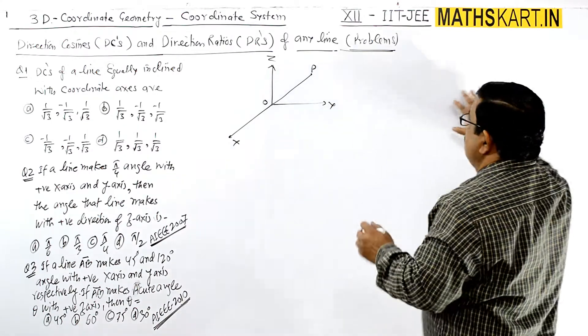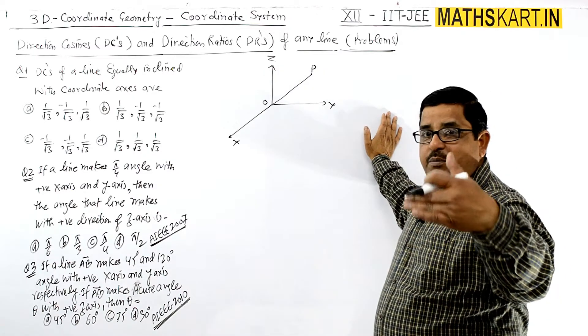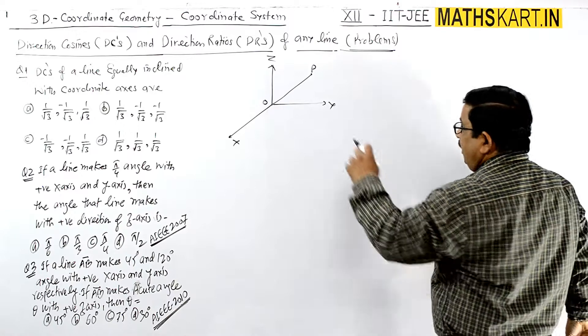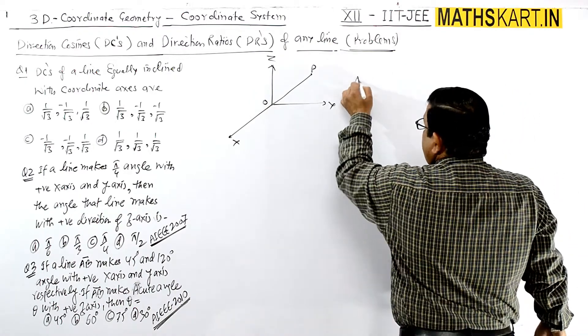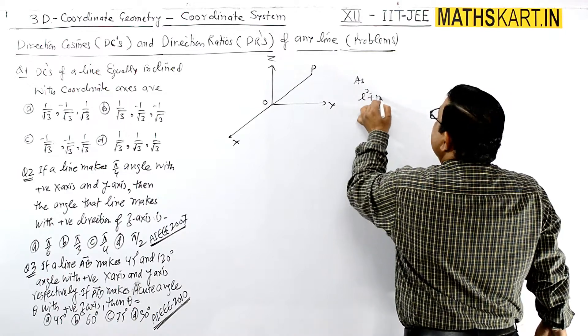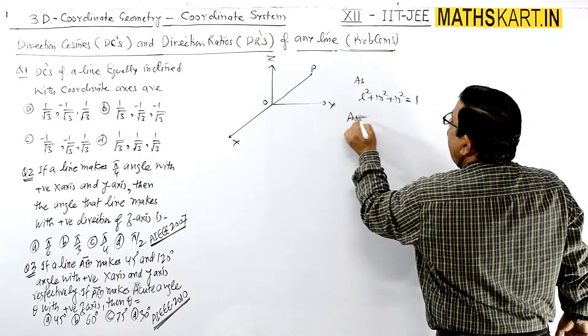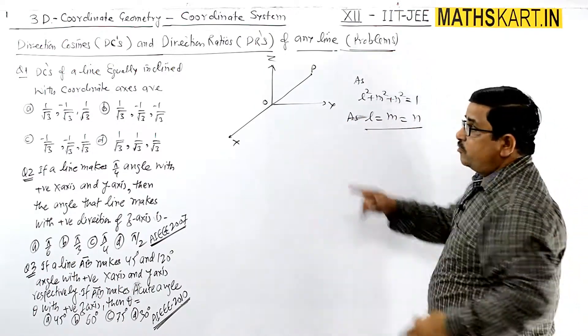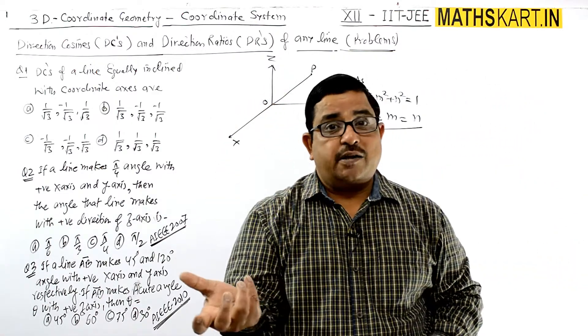We are looking for cos α, cos β, cos γ. We have to find out that particular angle. We know that L² + M² + N² = 1, but we know that L = M = N because it is equally inclined, so α = β = γ, which means L = M = N.